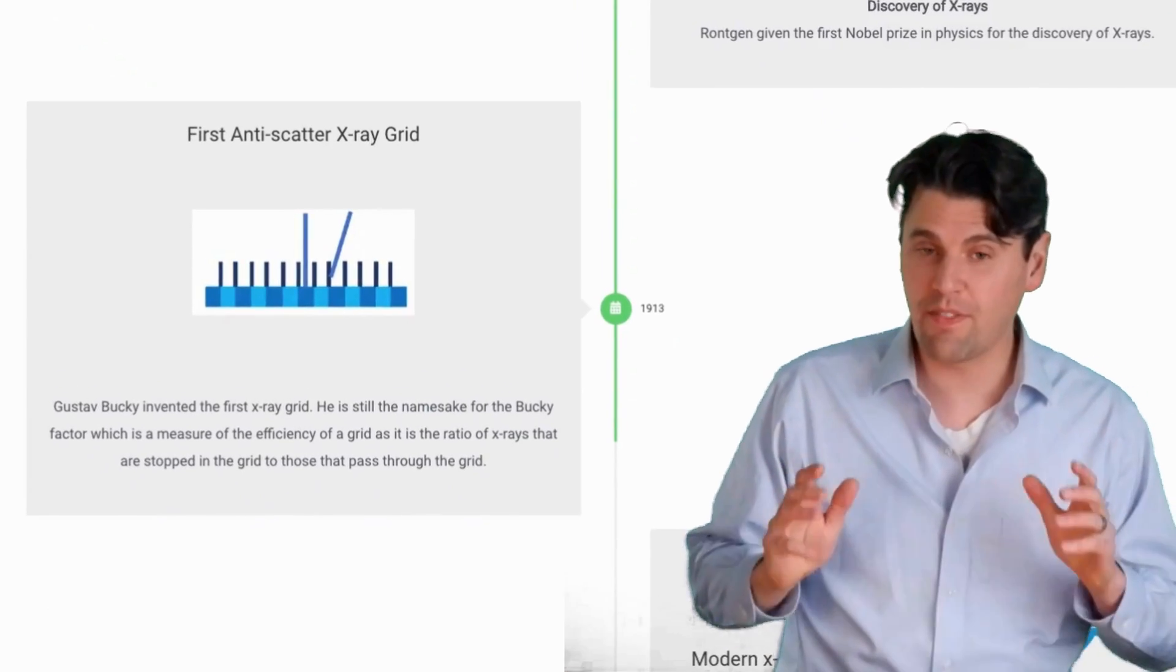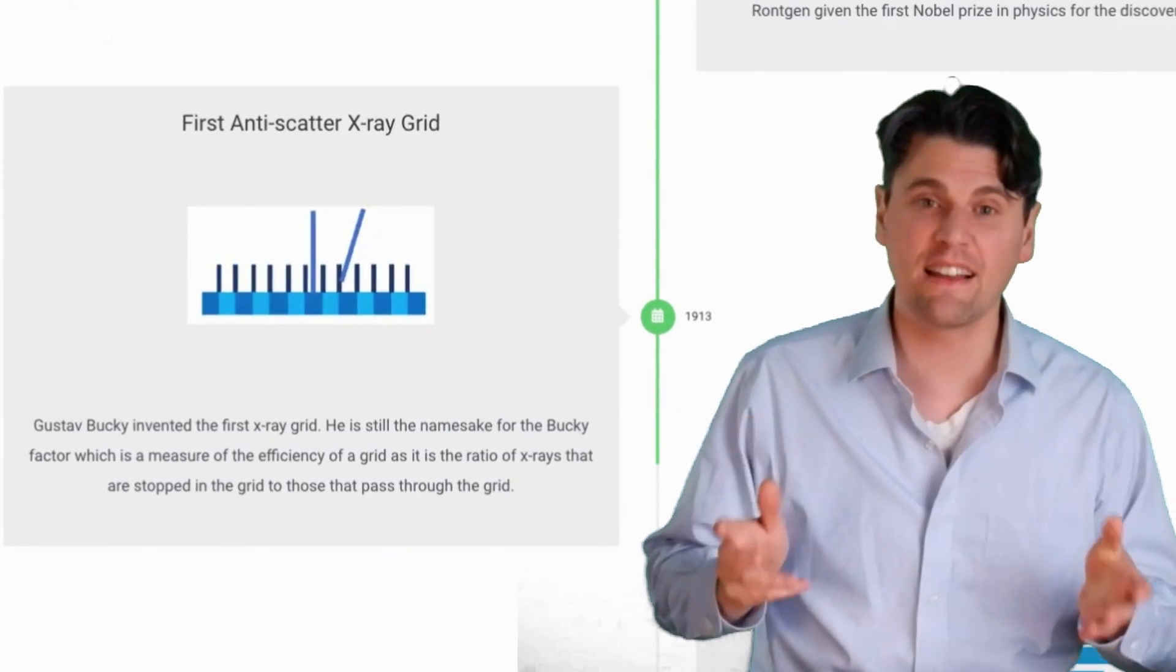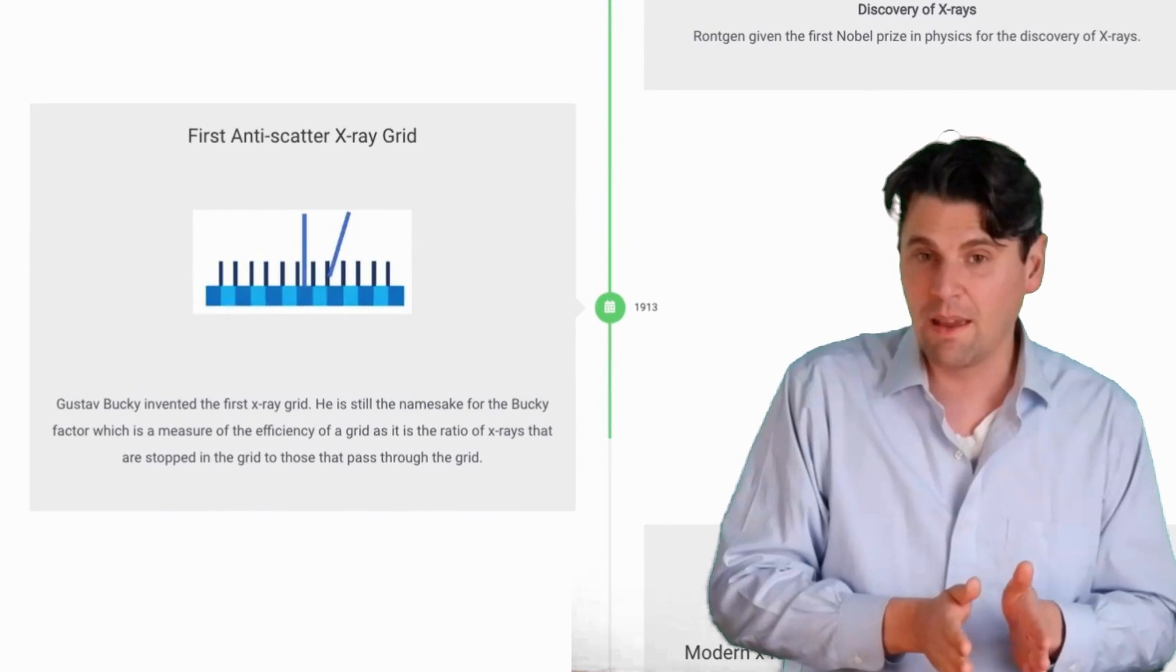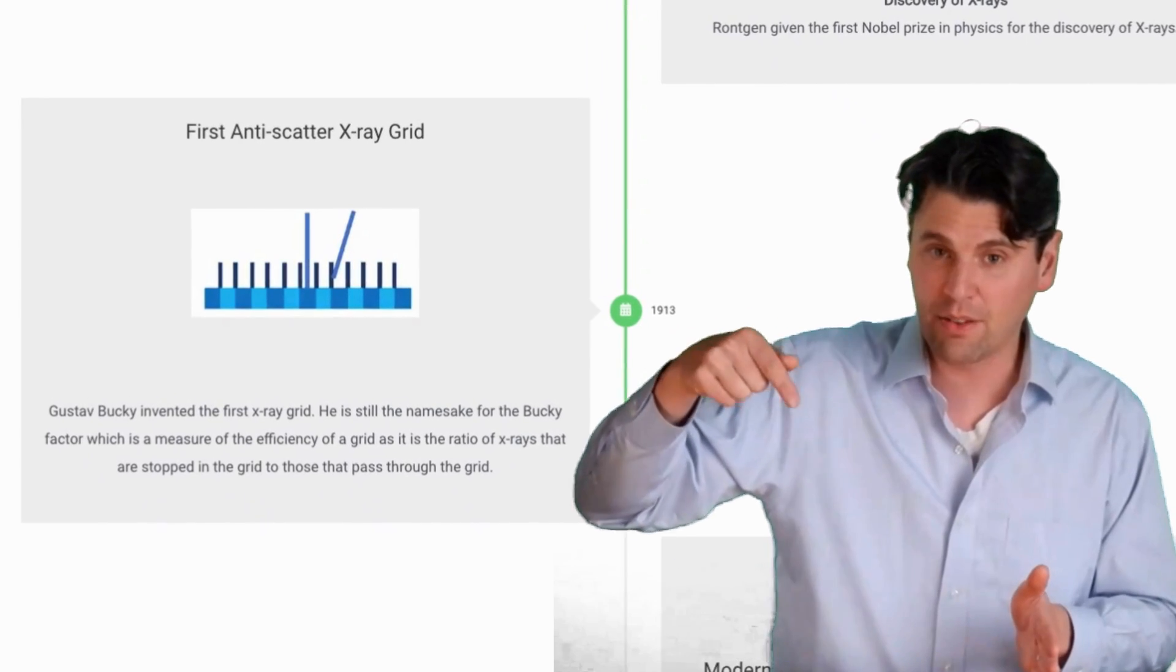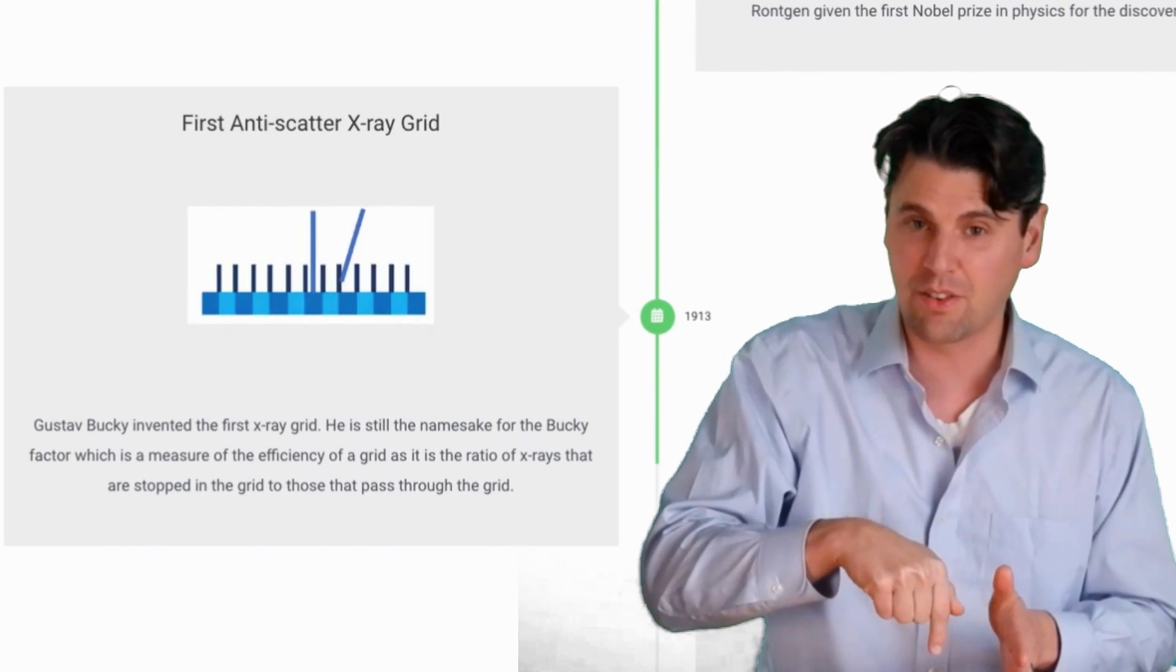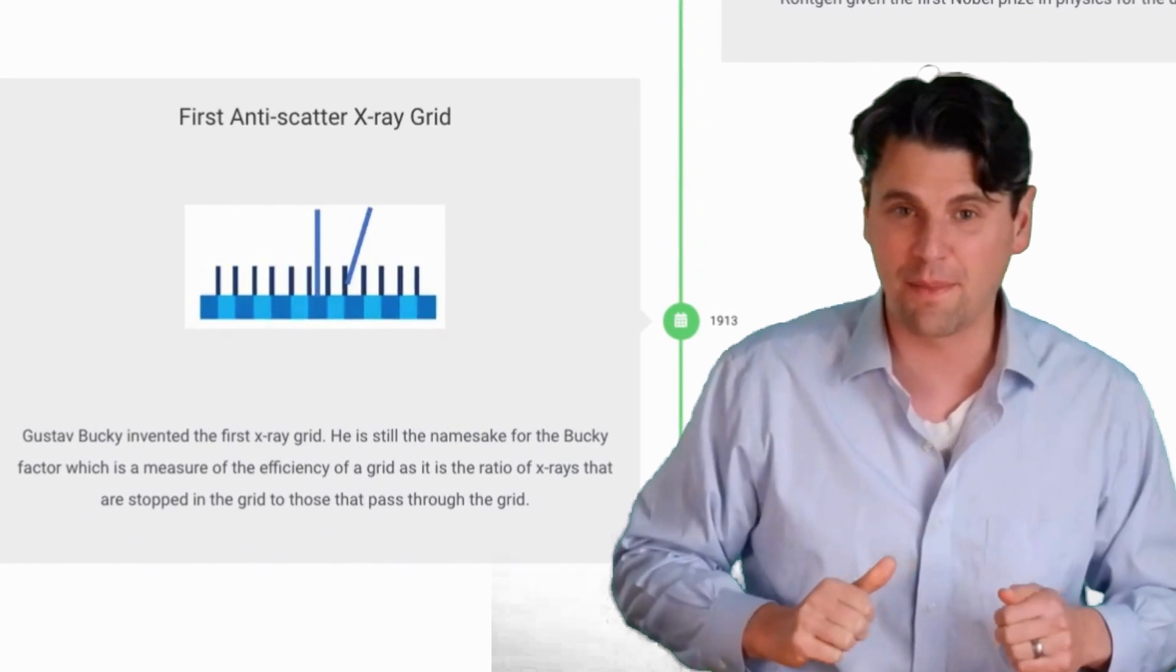In 1913, Gustav Bucke proposed an anti-scatter grid. The idea of having small plates placed right in front of the imaging receptor, such that X-rays that are coming at an angle will be preferentially blocked and X-rays coming straight on that are not scattered will hit the image receptor.